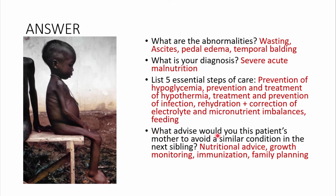For advice to the mother to avoid a similar condition in the next sibling: provide nutritional advice on what to feed the child. This may not be practical if the mother has a low socioeconomic status, but where possible, advise increasing the nutritional value of food. Also recommend growth monitoring by taking the child to the under-5 clinic.